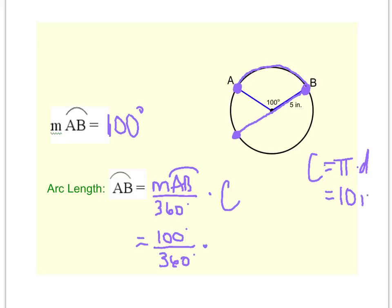And so the circumference of this circle is 10 pi. So I'm going to enter that here, 10 pi over 1.